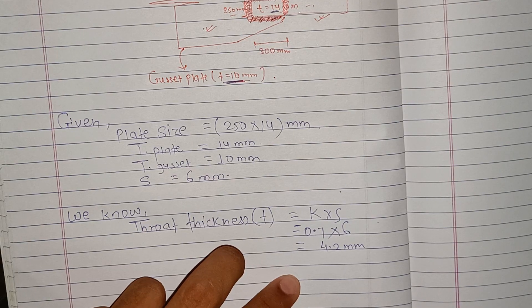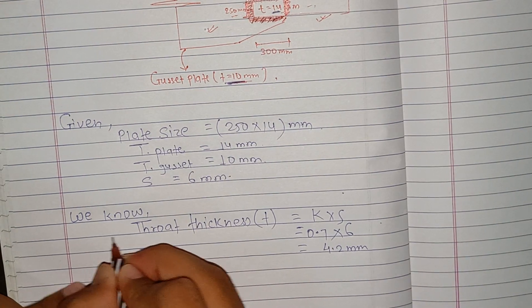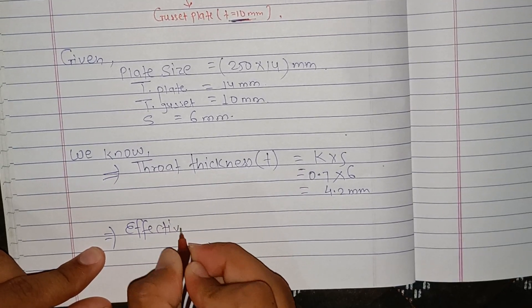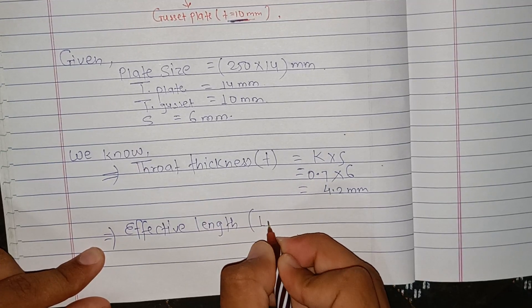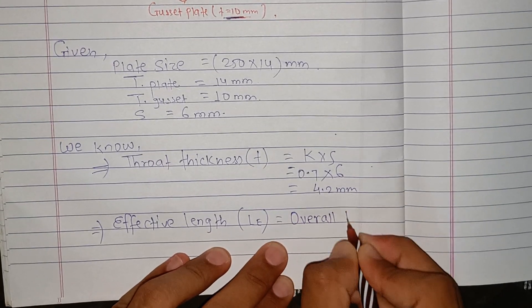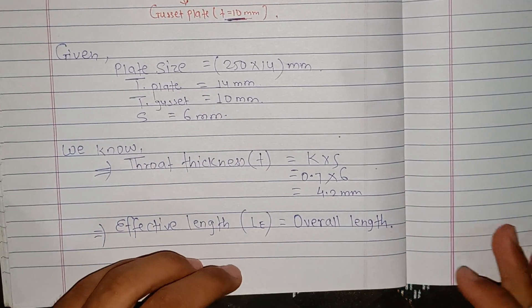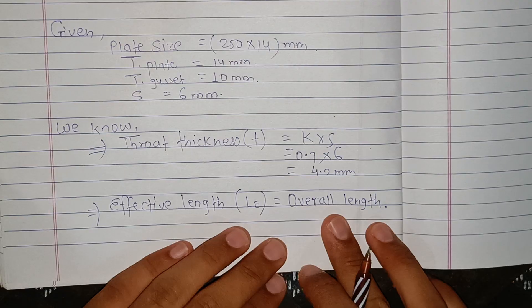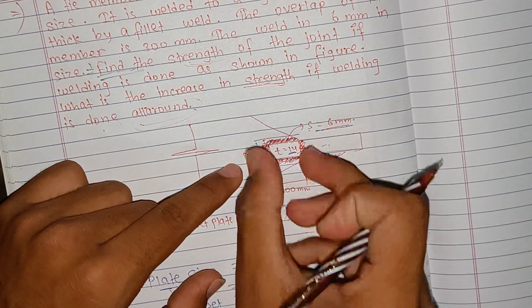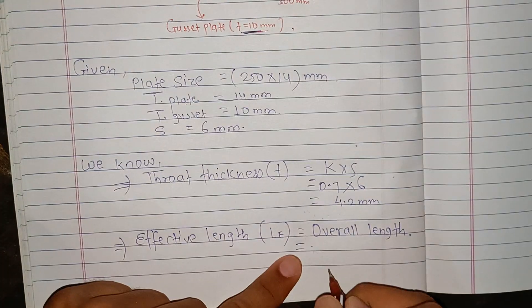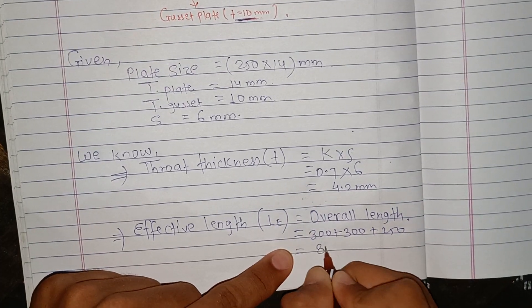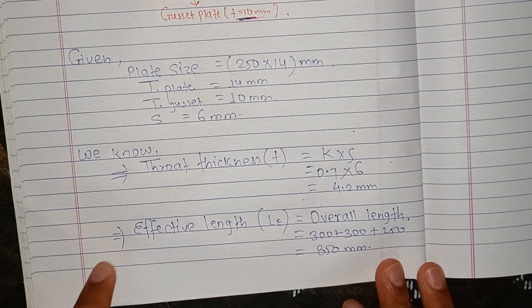The other steps involve effective length and overall length. For a fillet weld, effective length equals overall length minus 2 × size of weld. Overall length is 300 + 250 + 300 = 850 mm.